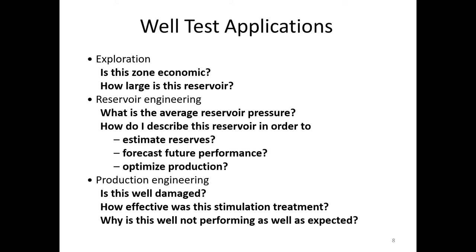After some time, production may decline — say from 2000 barrels per day to 1000 barrels per day — a 50% decline. We need to know whether the well is damaged. Well damage means the permeability near the wellbore has been reduced, possibly due to sand, asphaltene, clay swelling, or blocked perforations. Well test analysis can tell us the skin factor — how much the well is damaged. After a fracking or acidizing job, you can do another well test to find out how efficient or effective the treatment was.